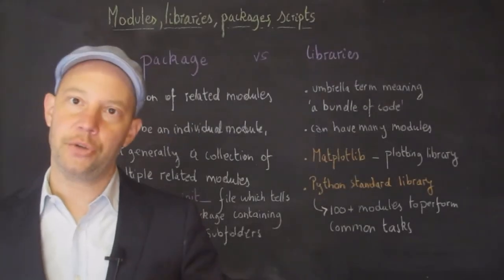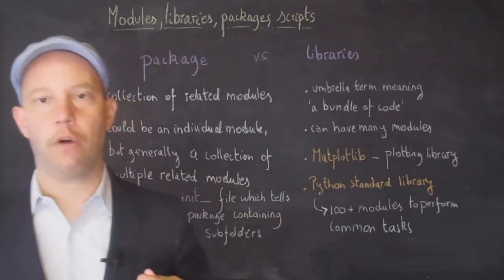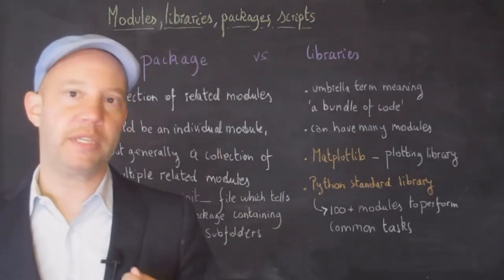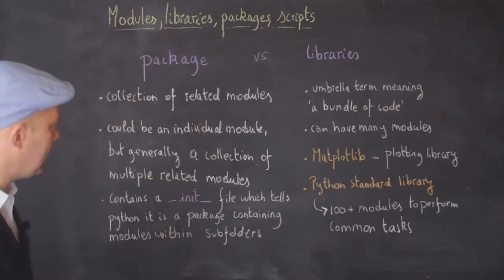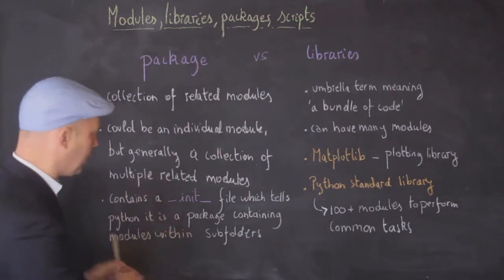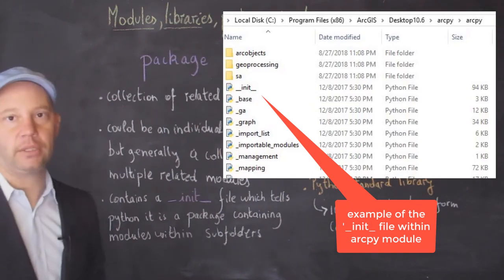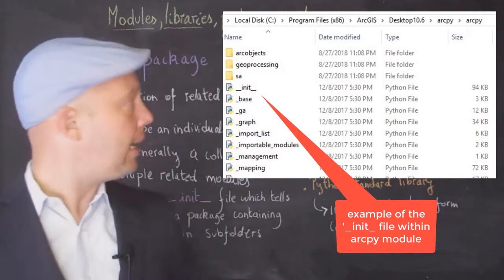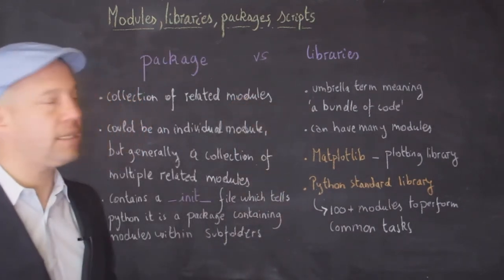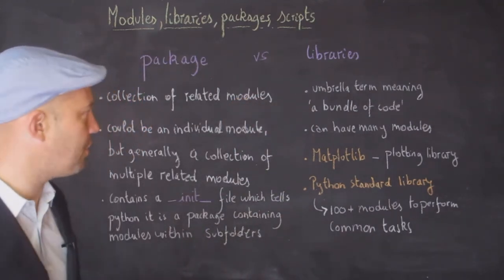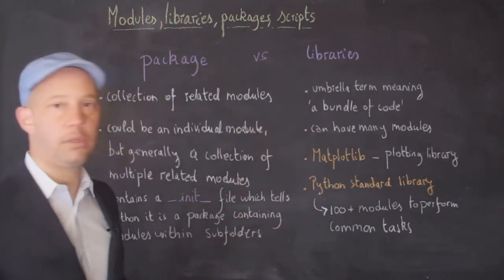Next, we make the distinction between packages and libraries. A package is usually a collection of related modules. Now, it's possible that a package is only one individual module, but that is quite rare. And typically, those modules are arranged into subfolders. And there is that file called init, which tells Python that there is actually a package.